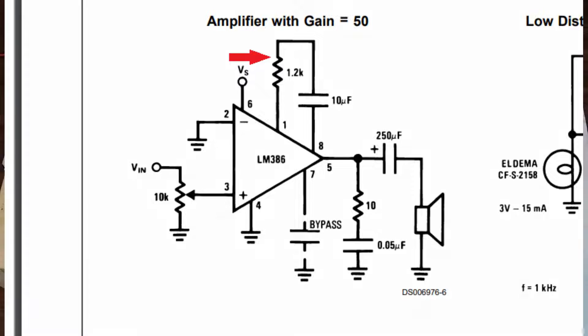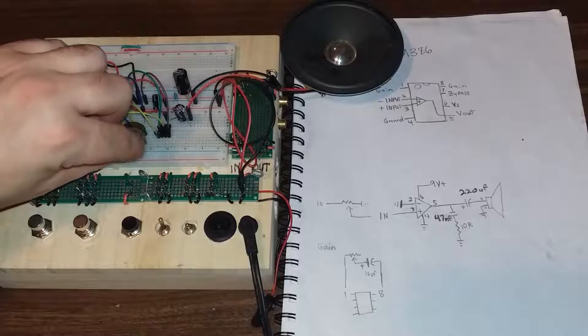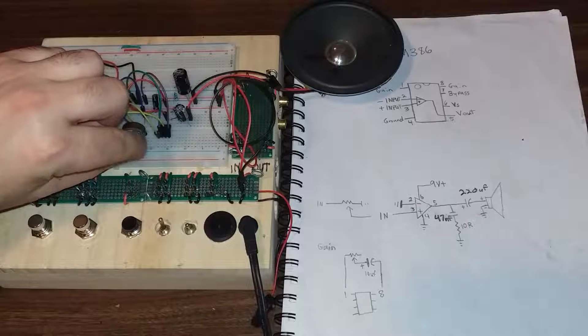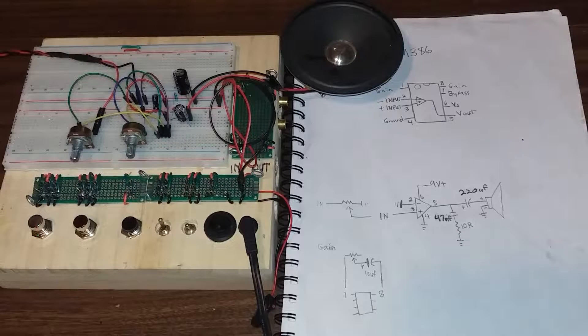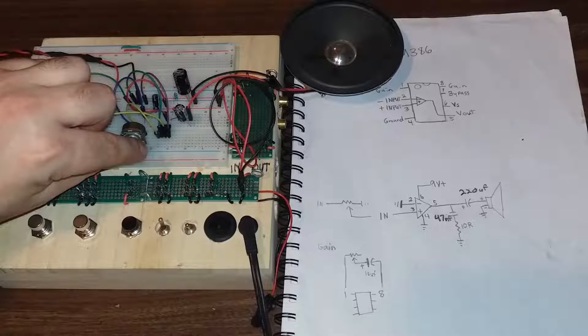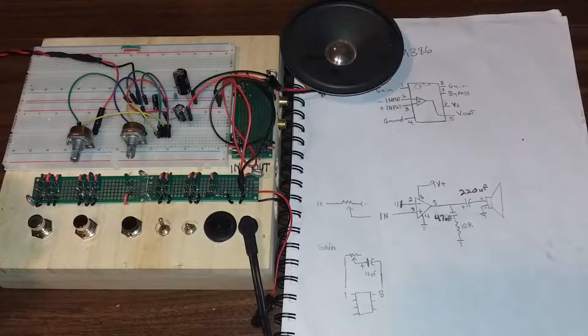In my video, How to Add Volume and Gain Controls to the LM386 Amplifier, I used a 5K potentiometer as a variable resistor in place of this 1.2K resistor so that I can control the amount of gain with the knob.